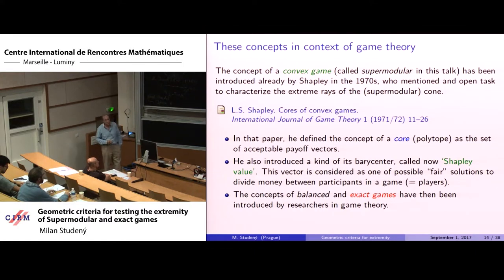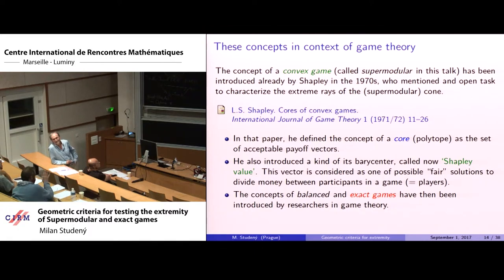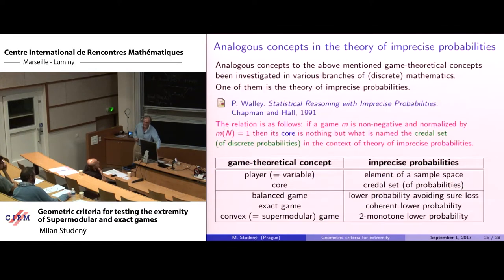The concepts of balanced and exact games were introduced later by researchers in game theory. The solution of a game is a choice of a point in the core polytope — the goal is simply to divide the money among players.